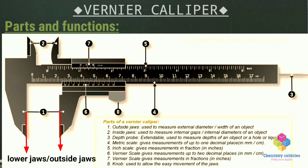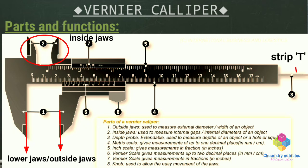The lower jaws are called outside jaws and they are used to measure the length of a rod, diameter of a sphere, or external diameter of a cylinder. The upper jaws are called inside jaws, which are used to measure the internal diameter of a hollow cylinder or pipe. A vernier caliper is also provided with a thin and long strip T attached at the back of the vernier scale. It slides with the vernier scale and is used to measure the depth of a small beaker.